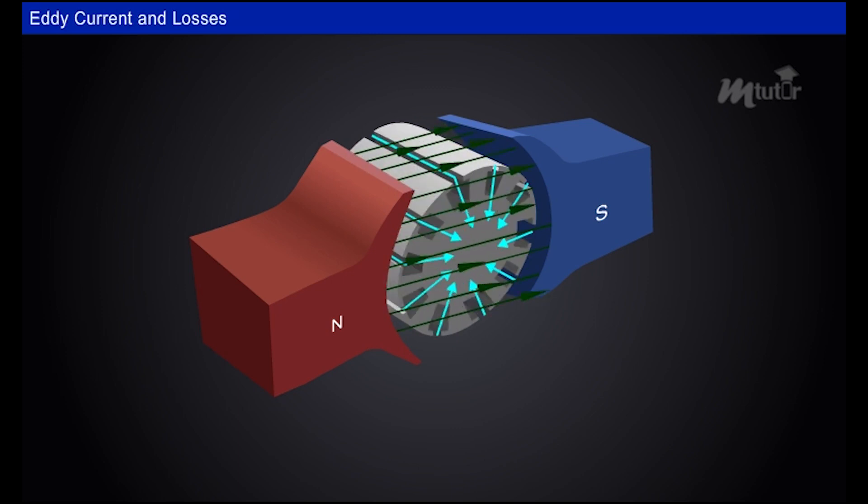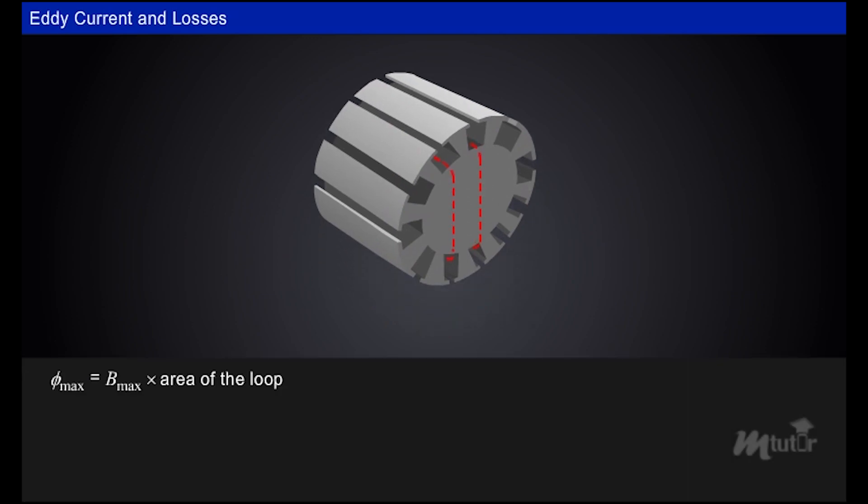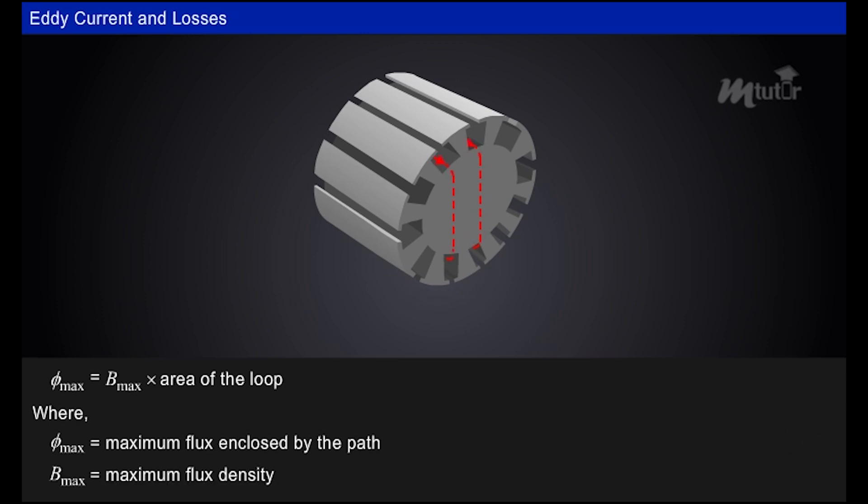This EMF causes circulating currents to flow in the rotor core. Induced EMF depends on the flux enclosed by the path, that is Φ_max = B_max × area of the loop, where Φ_max is the maximum flux enclosed by the path and B_max is the maximum flux density.